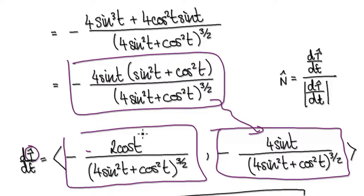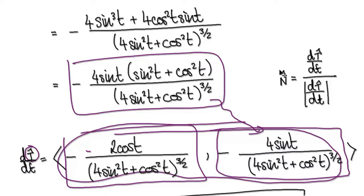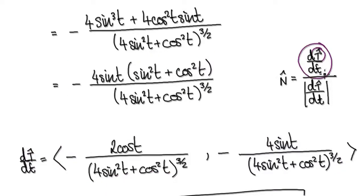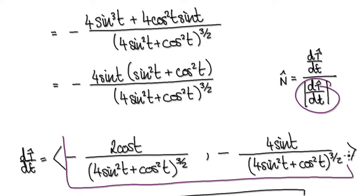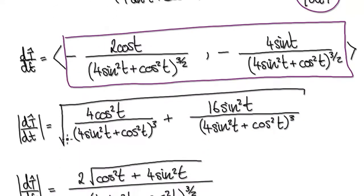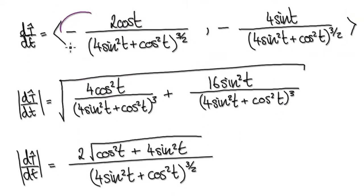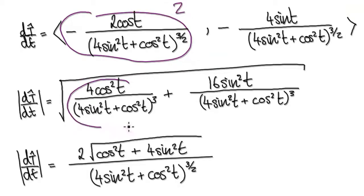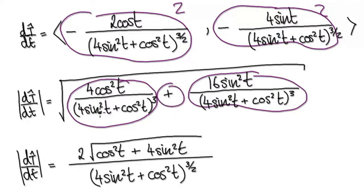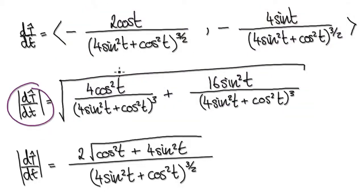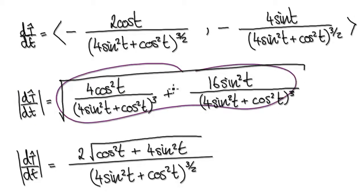So when you differentiate the unit tangent it gives you this thing here. We've just differentiated our unit tangent, so now we need to divide it by its magnitude to get the unit normal. Once we've got this, we need to work out its magnitude. The magnitude would be the x-component squared plus the y-component squared, add the two together, and then square root — that gives the magnitude, which simplifies to this thing here.